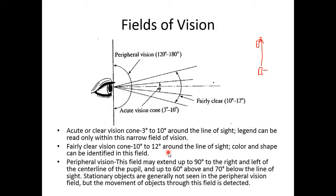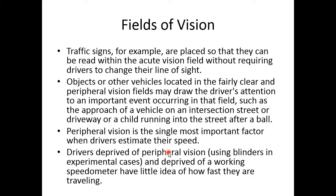An experiment was conducted where researchers blinded the side windows and blocked the speedometer, then asked drivers to estimate their speed. They found that drivers had significant problems judging their speed without the reference provided by peripheral vision, demonstrating how important peripheral vision is for speed perception.